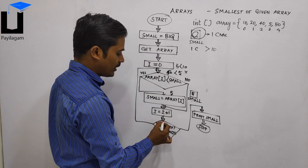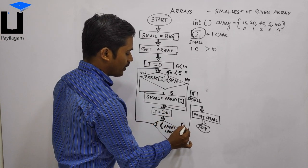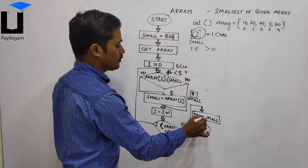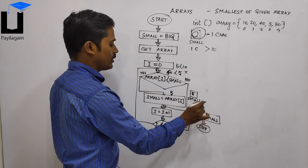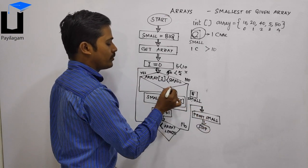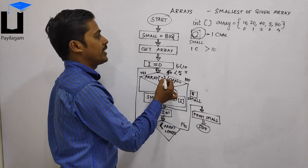Now we check the loop condition — if it is false, we exit the loop. We then print the small value. Small is 5, so we print it.